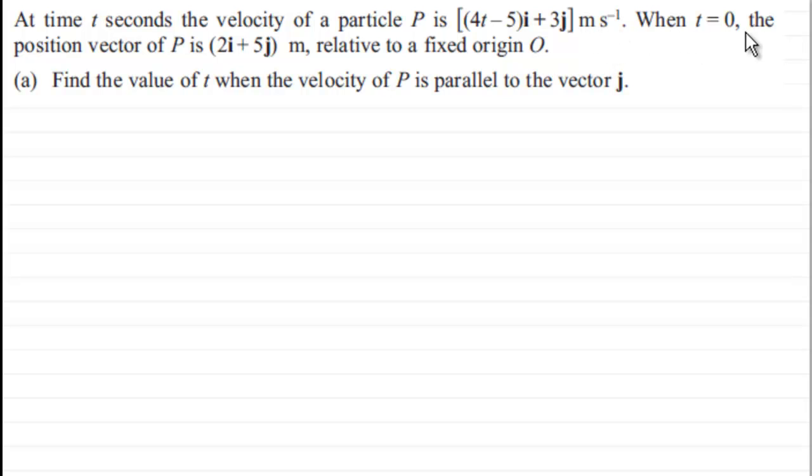And when t equals 0, the position vector of P is 2i plus 5j metres relative to a fixed origin O. And what we've got to do is find the value of t when the velocity of P is parallel to the vector j.